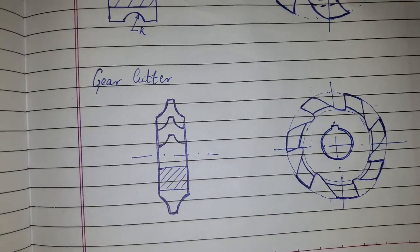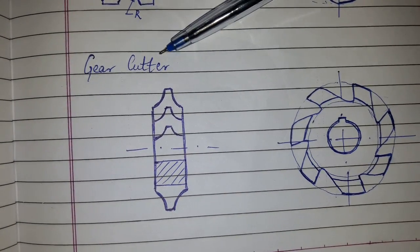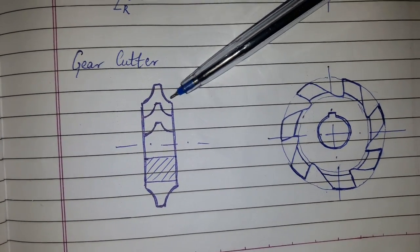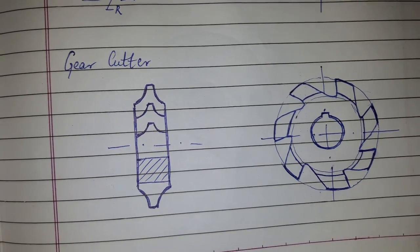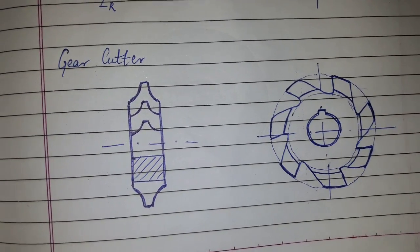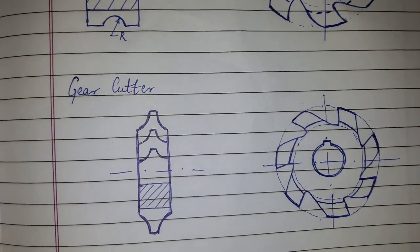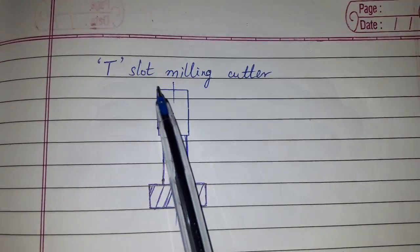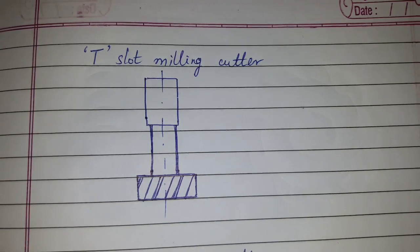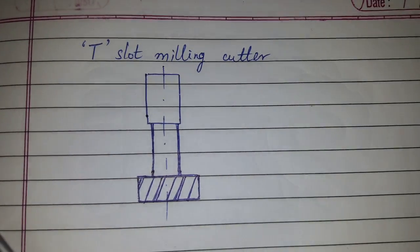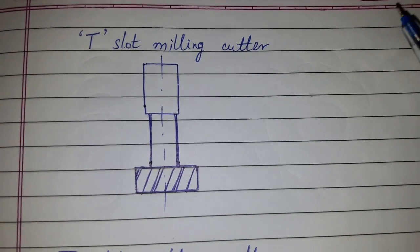This is a gear cutter — as you can see, with this you can cut gear teeth in the blank. And finally, this is a T-slot milling cutter. So these are the different types of milling cutters.